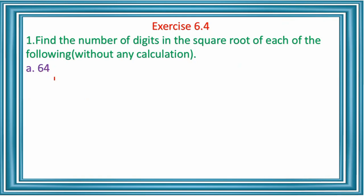How many digits are there in 64? It is a perfect square with only 2 digits. So we use the n/2 equation since n is even. Here n equals 2, so 2/2 = 1. The number of digits in the square root of 64 is 1. As you all know, the square root of 64 is 8.